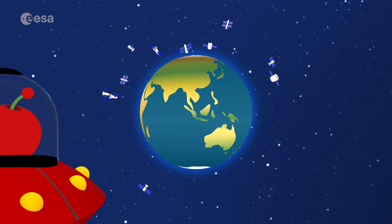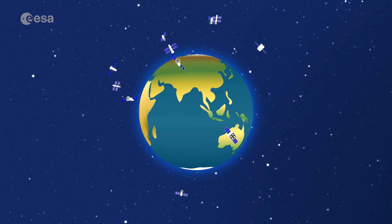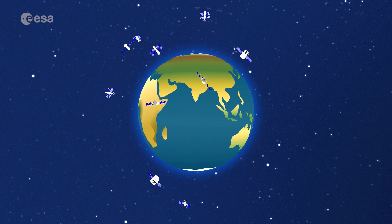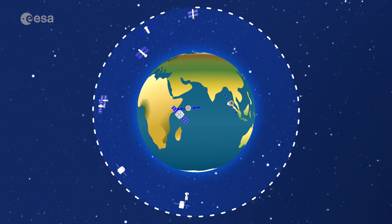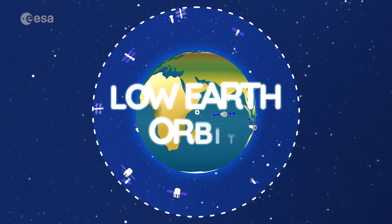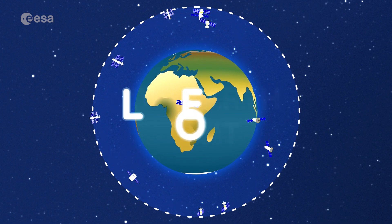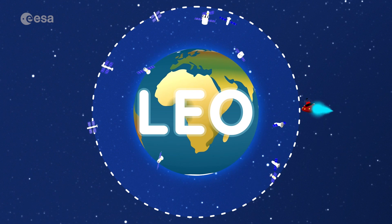We enjoy life on Earth and look after it with the help of lots of satellites. They work just above the Earth in what scientists call low Earth orbit. Let's go and take a look at what's happening there.